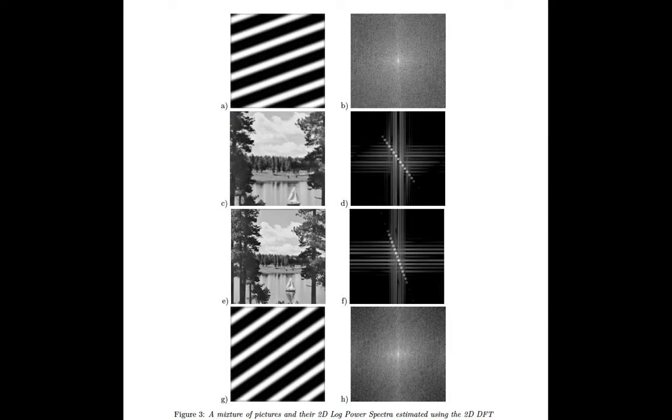All right, so it has to do with the way we've computed the Fourier transform. So we use the 2D DFT, the discrete Fourier transform, well in that case using the FFT directly onto the picture.